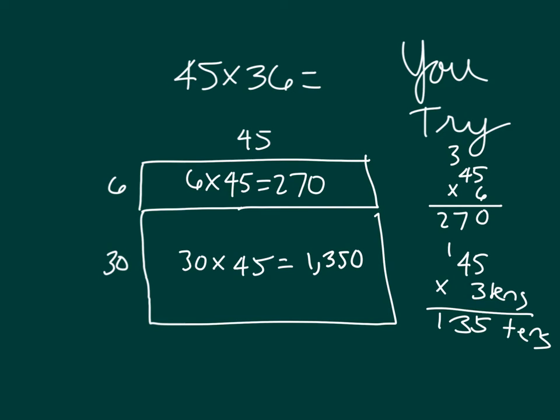How this connects back to the standard algorithm is like this. We're taking 45, multiplying it by 36, where we first look at 6 times 45. So what we do is we go 6 times 5, which is 30. We go 0, regroup the 3. 6 times 4, which is 24, plus 3, which is 27. And so there is that number, 270.